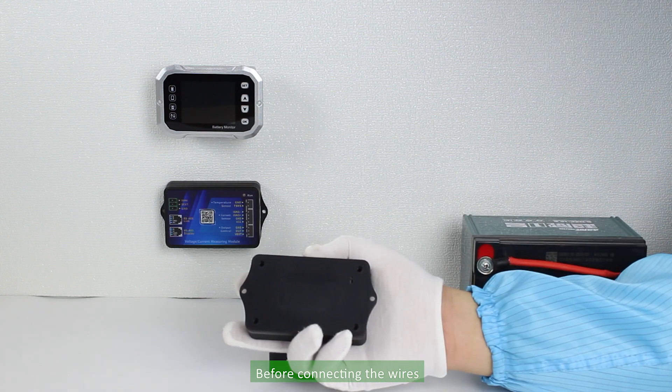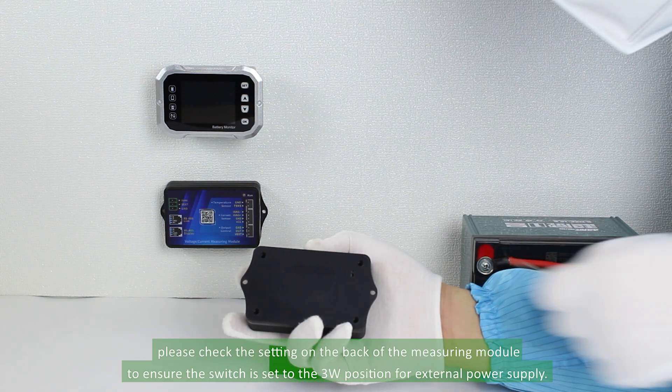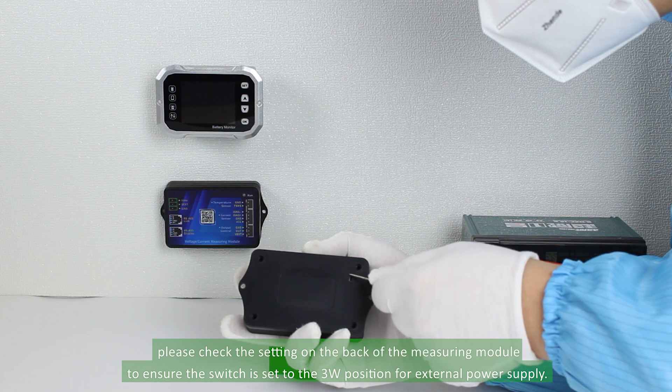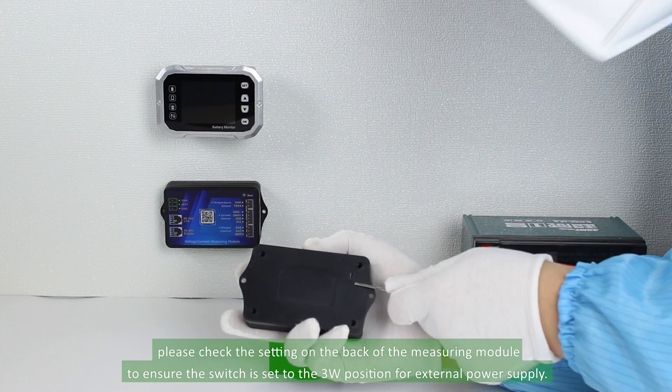Before connecting the wires, please check the setting on the back of the measuring module to ensure the switch is set to the 3W position for external power supply.